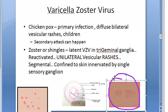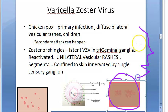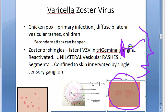Zoster produces vesicular rashes again, but unilateral, confined to the skin innervated by a single sensory ganglion. For example, if there is a trigeminal ganglion and this is the ophthalmic division — a sensory nerve — along this nerve you can have vesicular rashes that are unilateral, segmental, confined to the skin innervated by a single sensory ganglion.